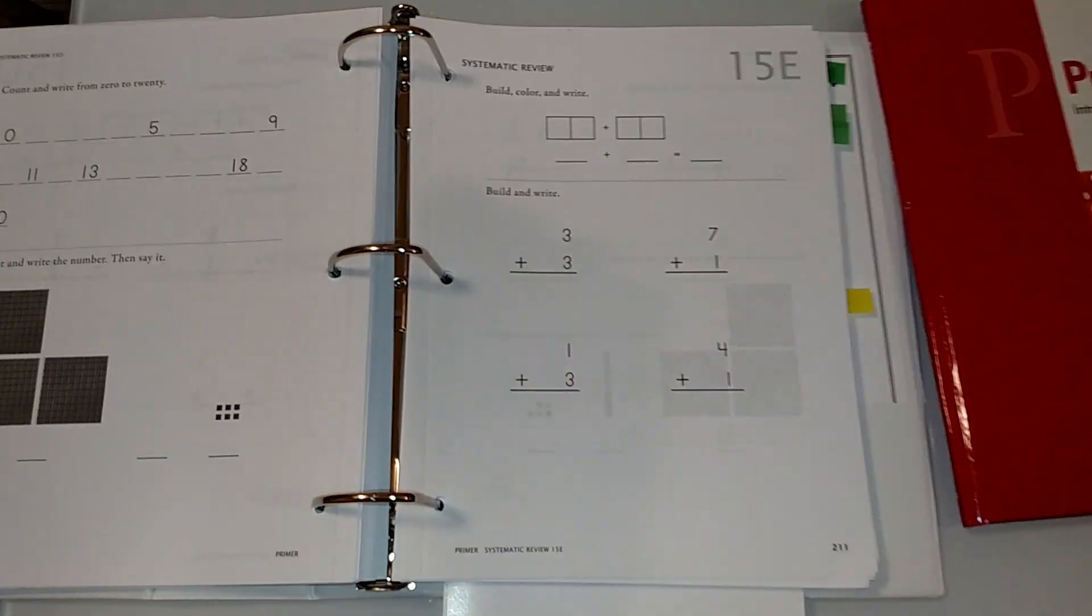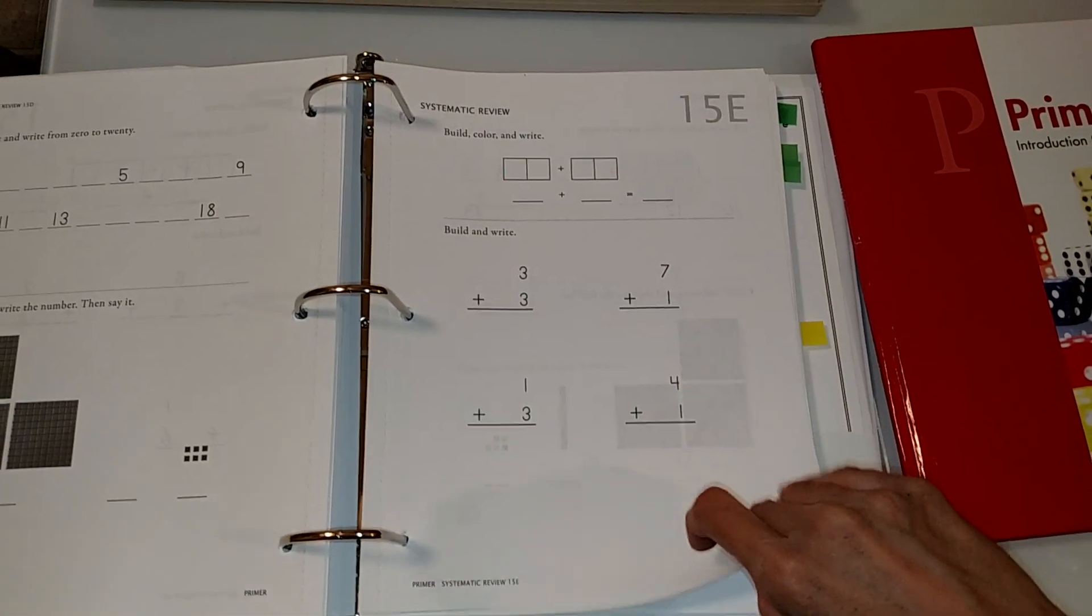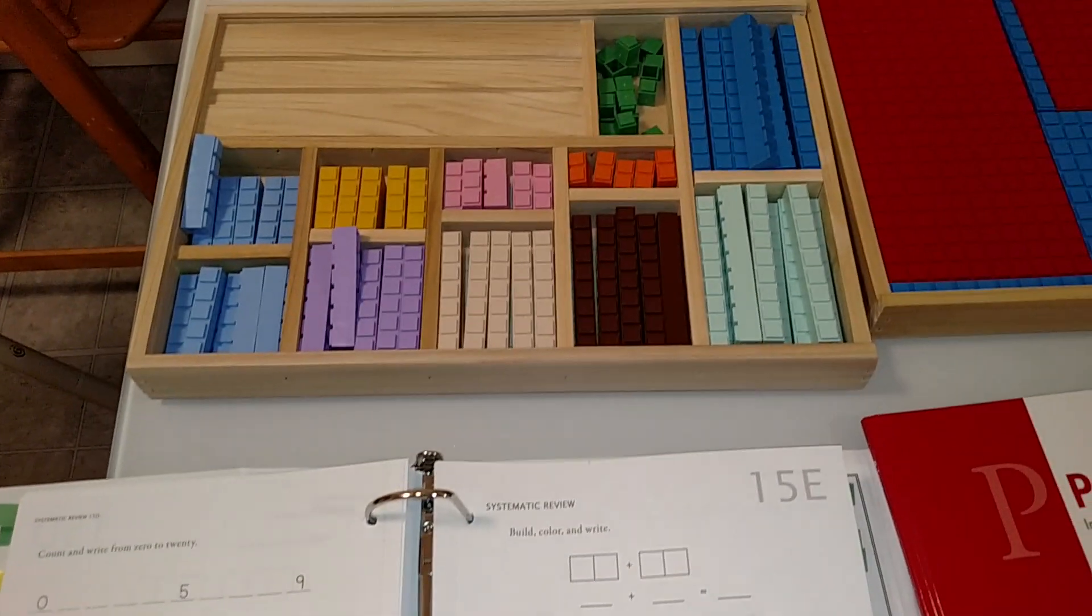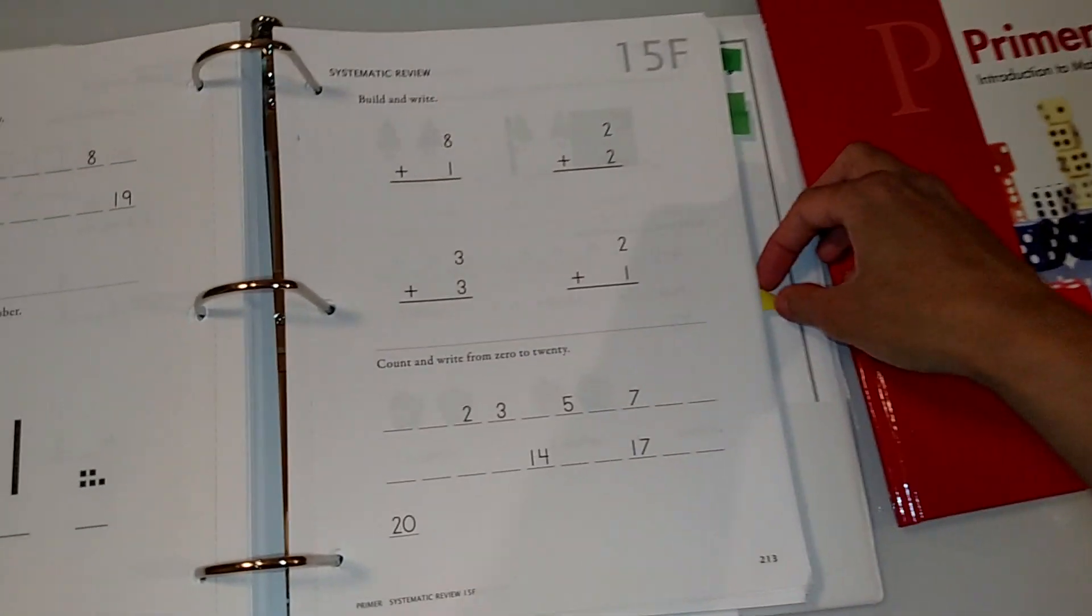So that's how you would do these addition problems. You could do it right here in the book as well, in the worksheet. You can place them in the blocks here instead of using the box. But I just find the box to be so much more useful.